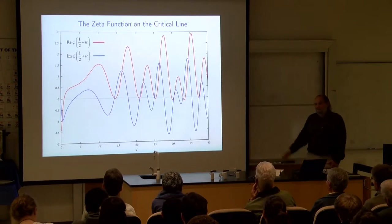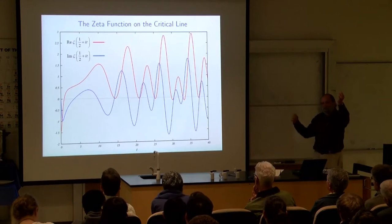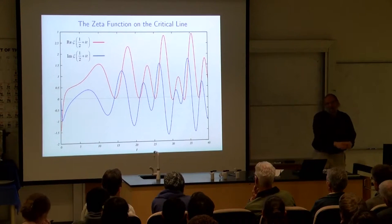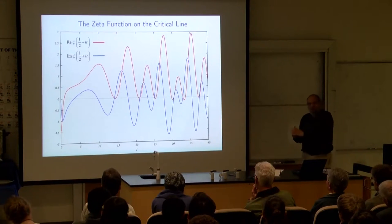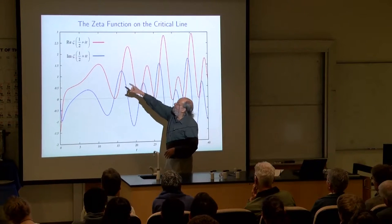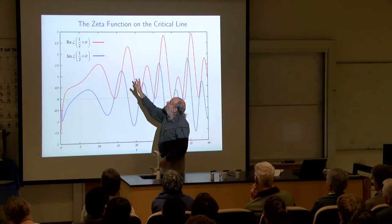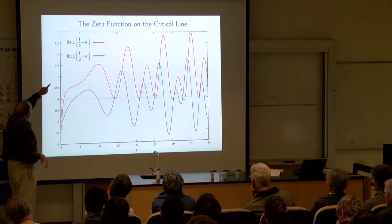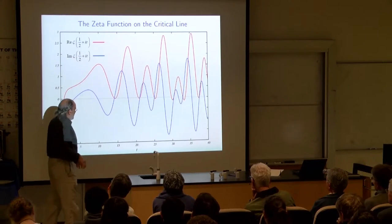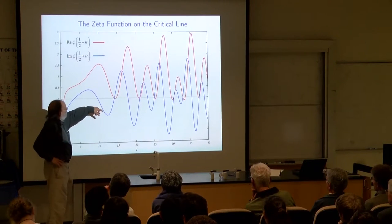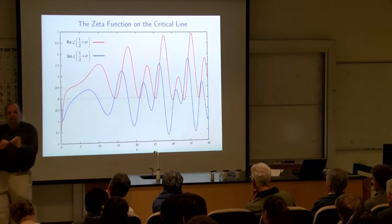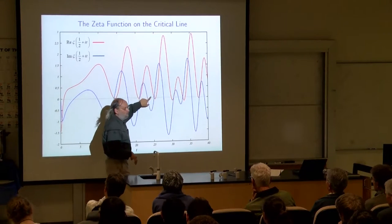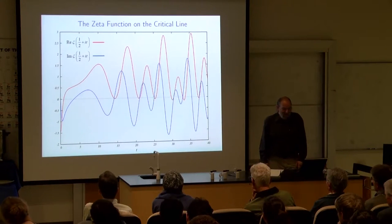Looking at zeta along the critical line, the real part has lots of zeros, and so does the imaginary part. But we have a zero of zeta only if both the real and imaginary parts are simultaneously zero. The first few non-trivial zeros appear around t=14, t=21, and t=25. It starts to get kind of messy after that. Riemann starts his 1859 paper with Euler's product identity: the observation, as a consequence of the fundamental theorem of arithmetic, that the product over all primes p of 1/(1 − p^{−s}) equals the zeta series sum of 1/n^s. This shows the deep connection between the zeta function and the prime numbers.